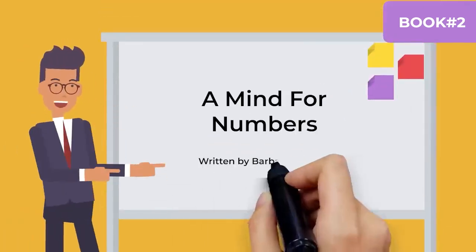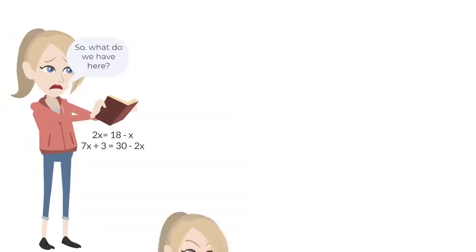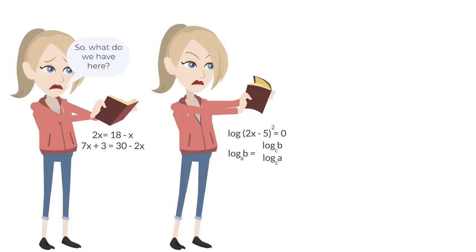A Mind for Numbers, written by Barbara Oakley. Chapter 1: Open the Door. When you can't do something, you probably start avoiding it, and that's your biggest mistake.